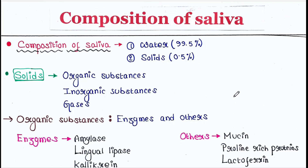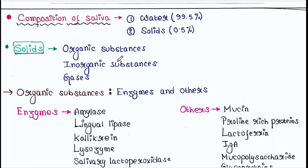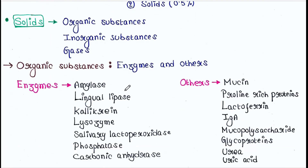Basically, saliva contains 99.5% water and 0.5% solids. Solids include organic substances, inorganic substances, and gases. Let's talk about organic substances first. Organic substances include enzymes and others.